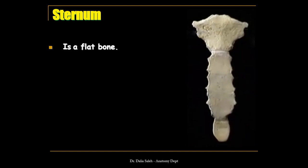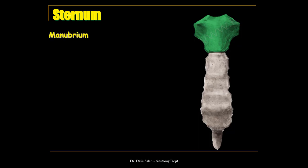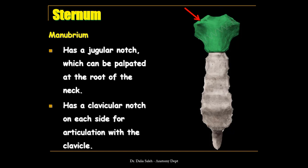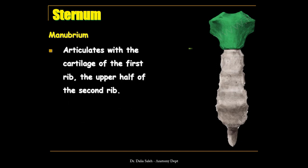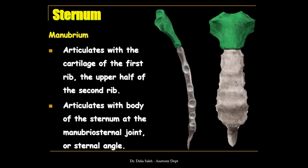The sternum is a flat bone. It consists of the manubrium sternum, the body of the sternum which is nearly double the size of the manubrium, and the last piece called the xiphoid process. The manubrium sternum has a jugular notch at its upper border, also called the suprasternal notch, which can be palpated at the root of the neck. On each side of the jugular notch, we have a clavicular notch for articulation with the medial end of the clavicle, forming the sternoclavicular joint. The sides of the manubrium articulate with the first costal cartilage and half of the second costal cartilage. Its lower border articulates with the upper border of the body at a joint called the manubriosternal joint or sternal angle.